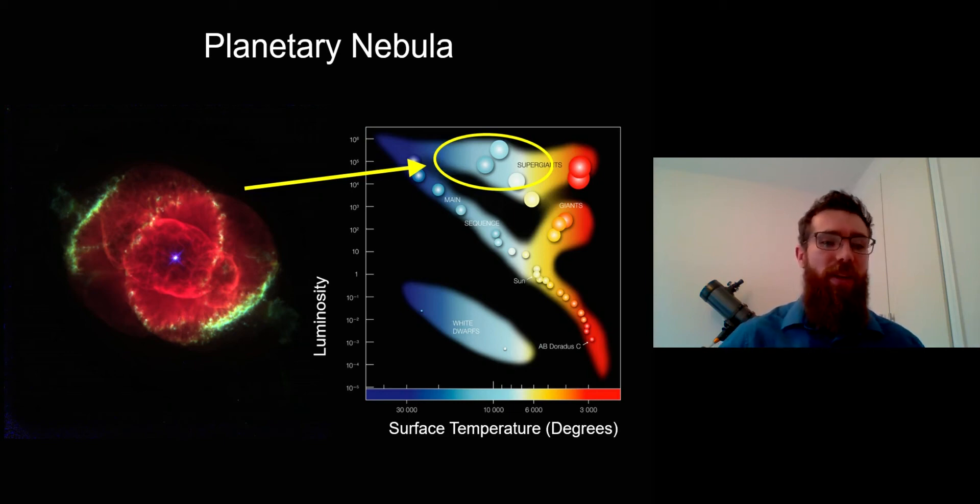Because these outer layers are spread out and expanding, and then they're illuminated themselves, they're quite luminous, so they appear quite bright. Their surface temperature increases because that central core is now exposed, so they appear to have a much higher surface temperature as well.